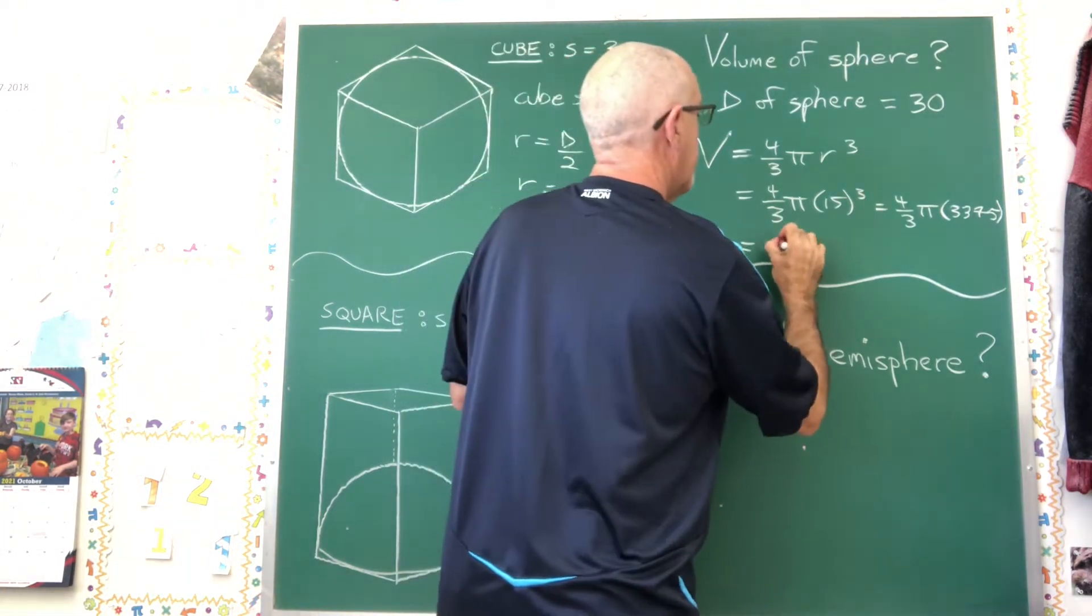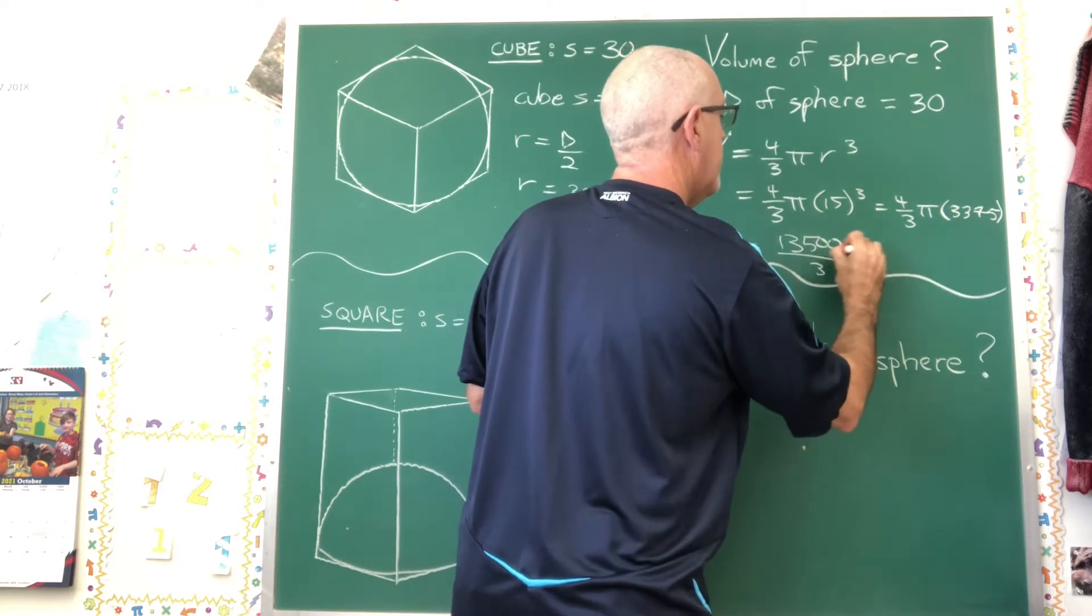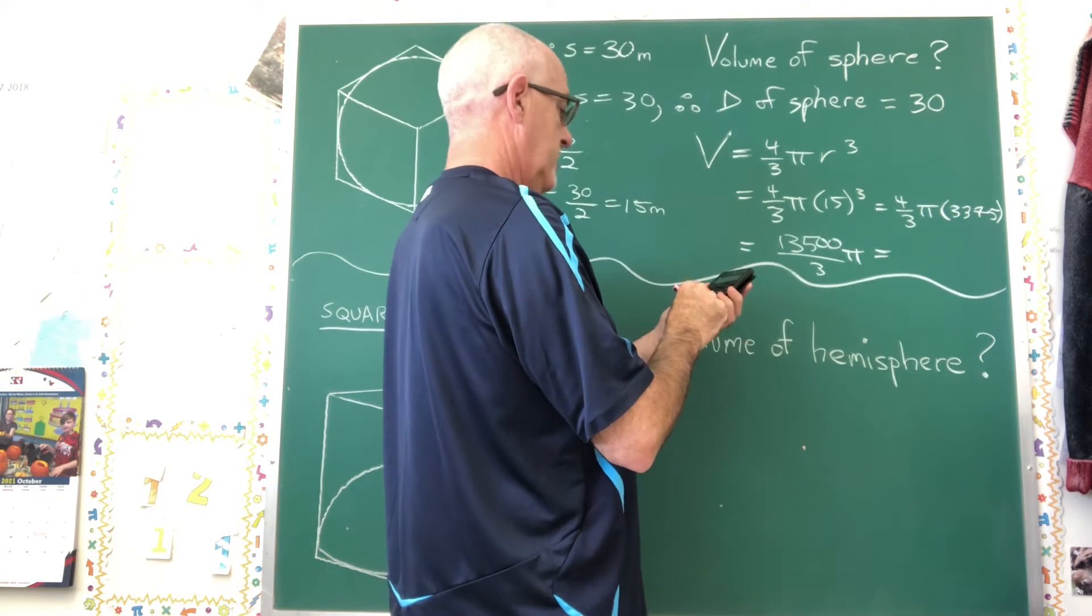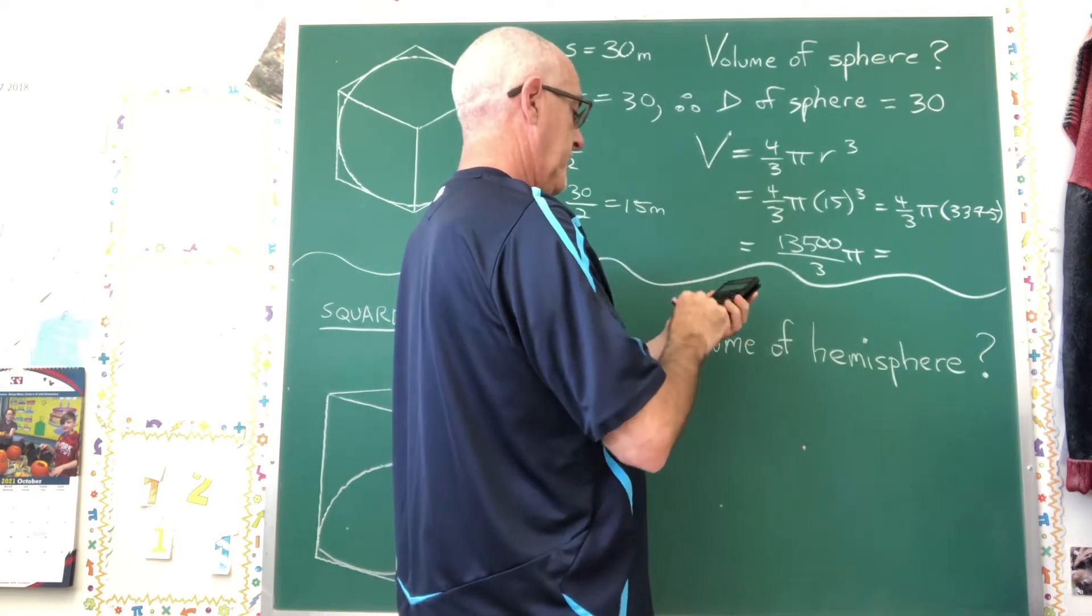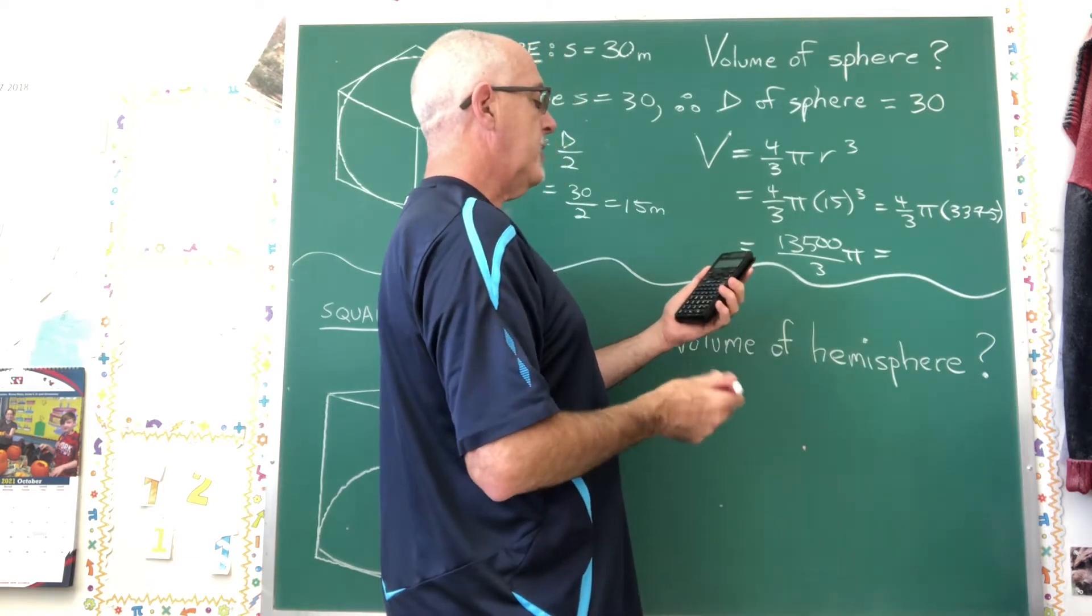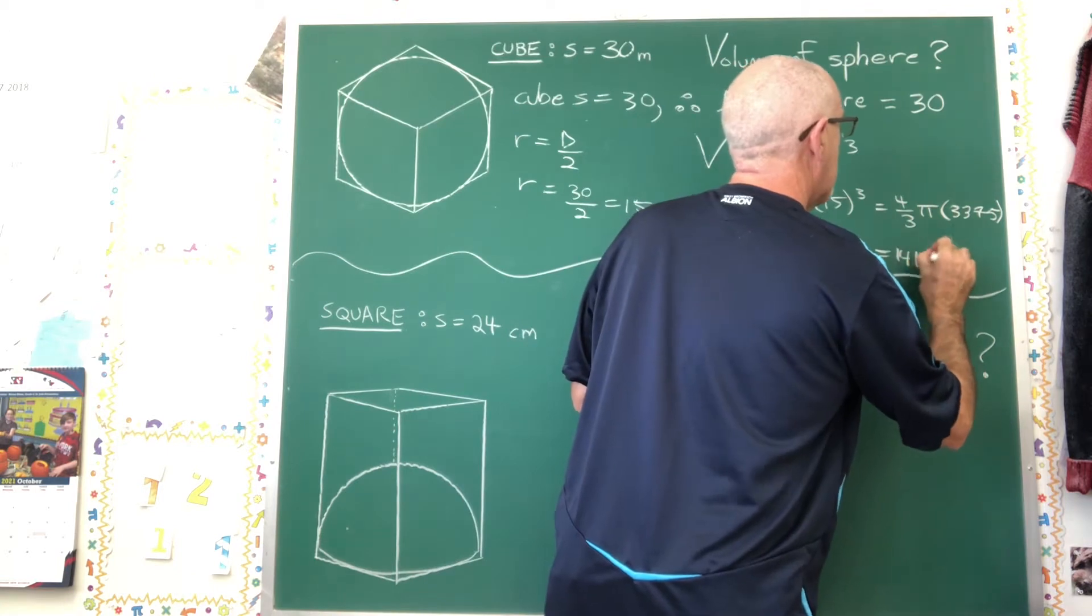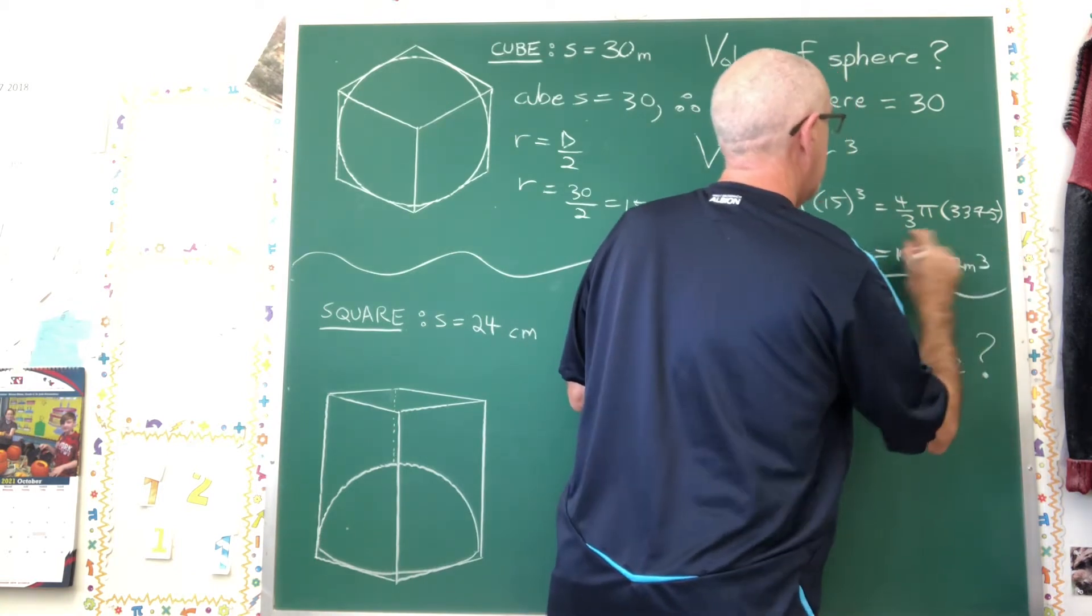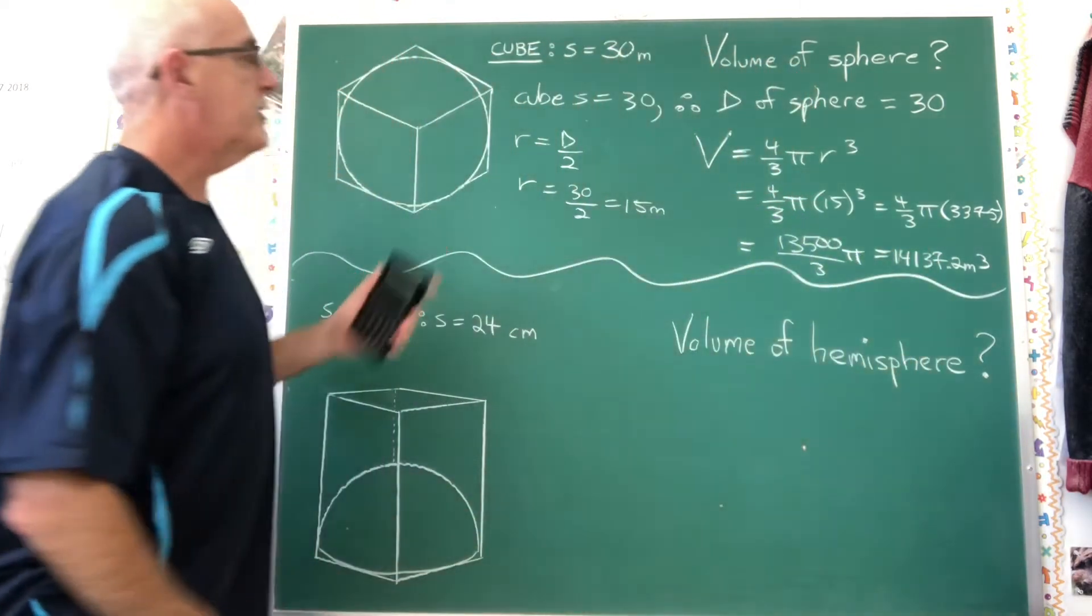Therefore, 13,500 over 3 pi. And I'll go into decimal with a bit of rounding. I have 14,137.5 meters cubed as the volume of this sphere.